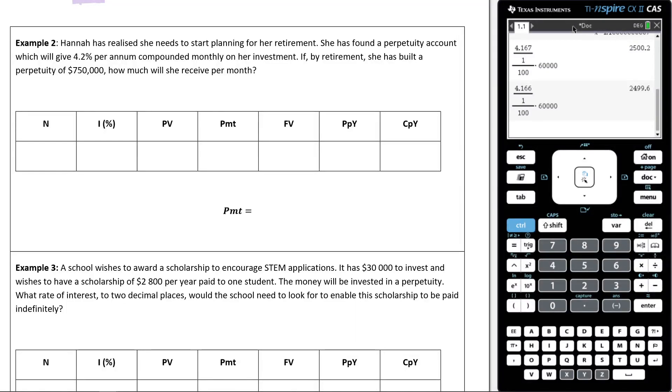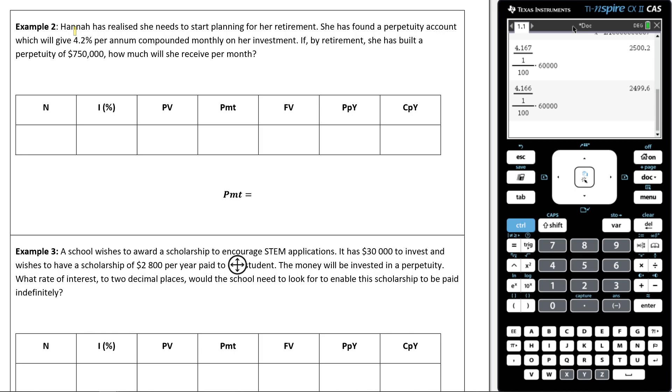All right, let's answer this example here. Make sure you've got your highlighter ready. Hannah has realized she needs to start planning for her retirement. She has found a perpetuity account which will give her 4.2% per annum compounding monthly on her investment. If by retirement, she has built a perpetuity of $750,000, how much will she receive per month?